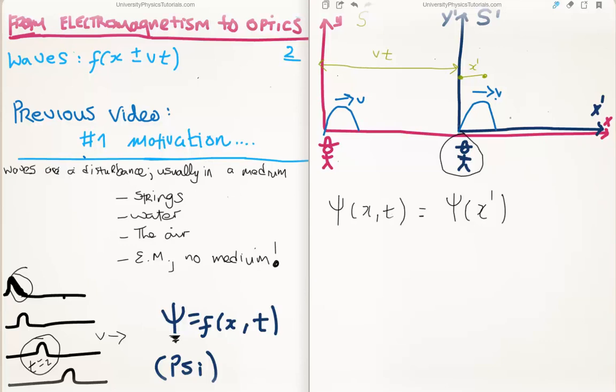But it can also be written as psi, a function of x prime. This is for the person moving with the wave. Now why is there no time dependence? Well because the shape of the wave or where it's going is time independent. Because as far as he's concerned, the wave isn't moving. It's just standing there. But for this observer, the wave is moving. So there is a time dependence. So you can have psi a function of x and t, or simply function of x prime.